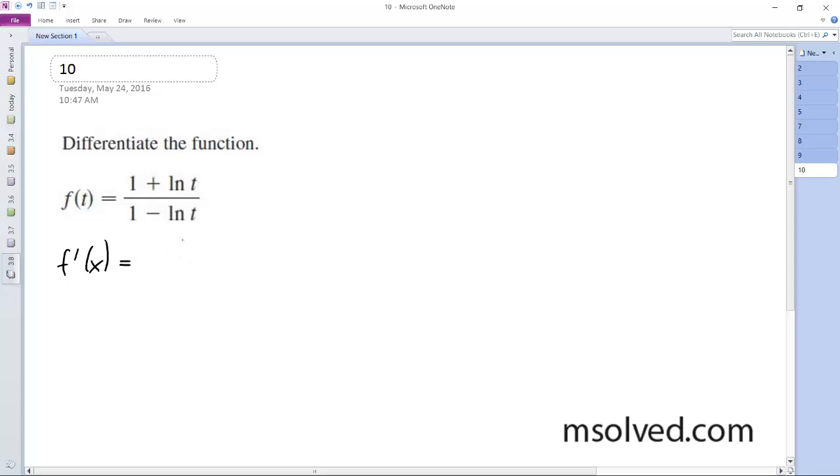So derivative on top, I'm going to get 1 over t times 1 minus ln t minus negative 1 over t times 1 plus ln t all over 1 minus ln t squared.